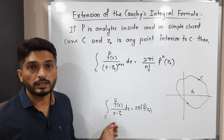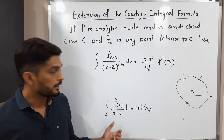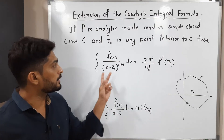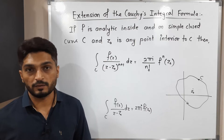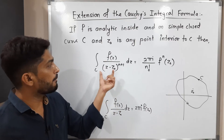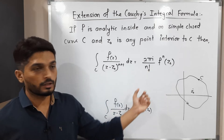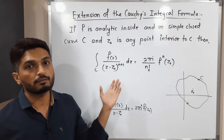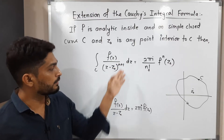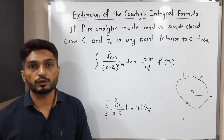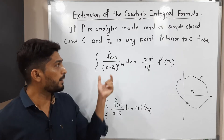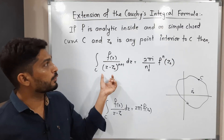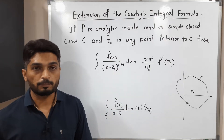Comparing these two definitions, you can easily see the difference. In the original formula we have (z − z₀) raised to 1, but in the extension we have (z − z₀) raised to n+1. This is the only difference, and because of this power we have corresponding changes on the right-hand side. If we put n = 0, we recover the original Cauchy's integral formula. When the power is 2, 3, 4, or higher, we use the extension.